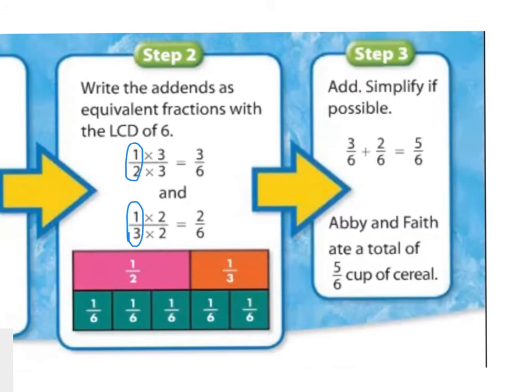Then we add. We're going to simplify, if possible. We know that when we add, we add the top numbers. Three plus two is five. We keep the bottom numbers the same. Five-sixths. Abby and Faith ate a total of five-sixths cups of cereal. I cannot simplify this, so that's my answer.